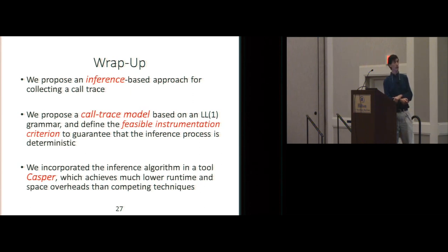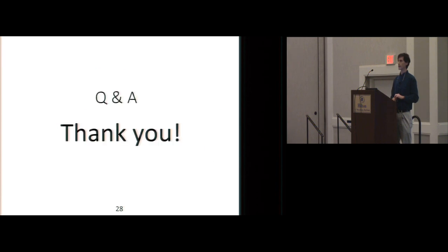Okay, so to wrap up, their idea is work with the sparser language, sparser set of instrumentation sites, do an offline process to infer placement of the correct symbols back into the call trace. Their trick is, or their observation is based on using the properties of LL1 grammars. They have these corresponding grammars. Their problem is how do they make the second grammar LL1? They have some heuristics in order to make it LL1 to make the whole thing work. And then they incorporated it into their tool, Casper, and showed that they get lower run time and space overheads than the competing techniques. Okay, with that, let me stop and take questions.